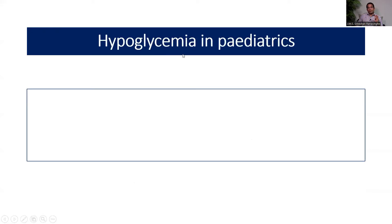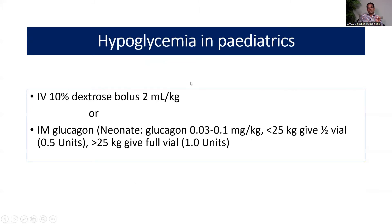A few words about hypoglycemia in pediatrics: treat with 2 mL/kg of 10% dextrose. If no cannula is available, give IM glucagon. For patients less than 25 kg, the glucagon dose is 0.5 mg; for patients more than 25 kg, give 1 mg.